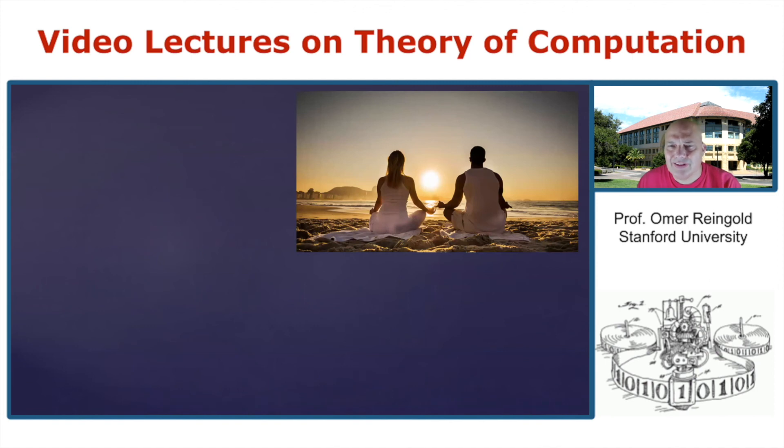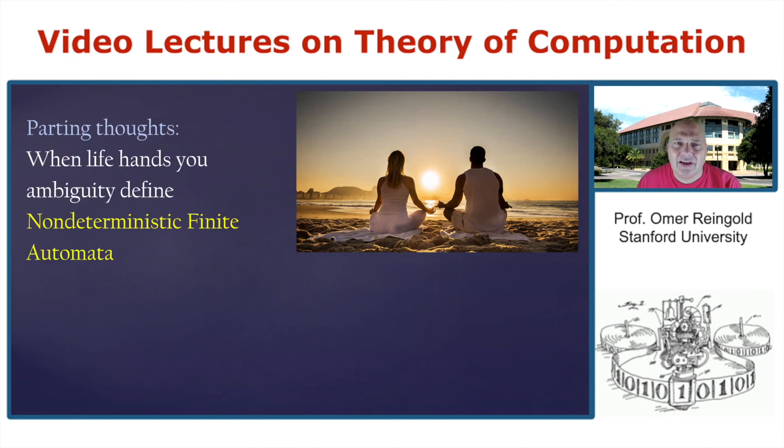So as some parting thoughts for this video, when life hands you ambiguity, you can define non-deterministic finite automata. What we saw here is exactly an example of how good theory works. Good theory reaches an obstacle and turns it into a new notion. And it turns out to be as exciting as anything else we wanted to do.